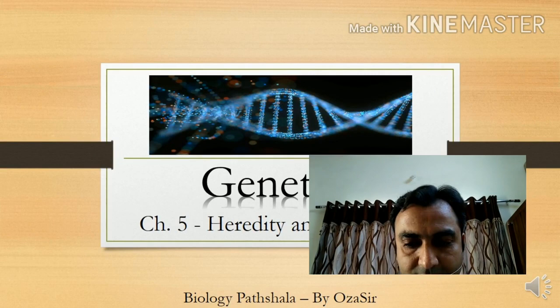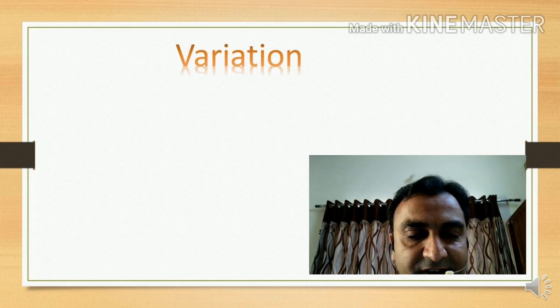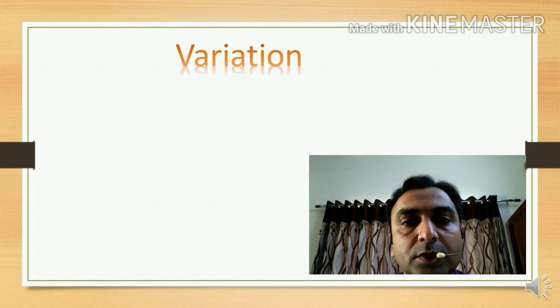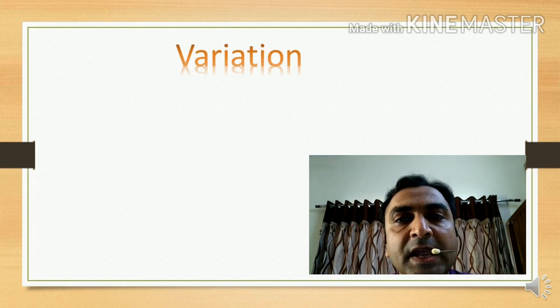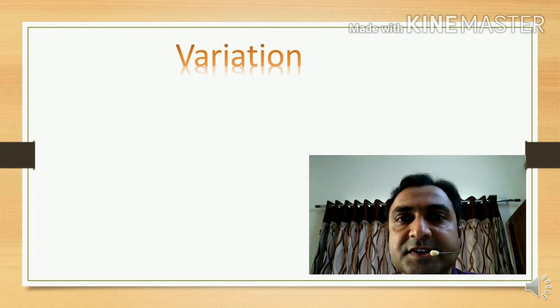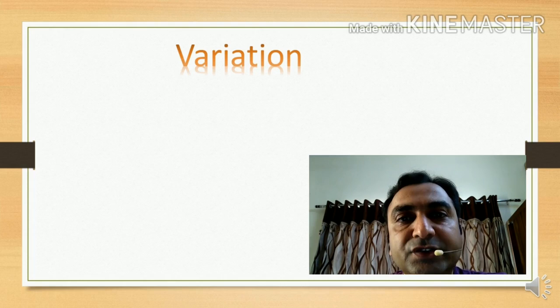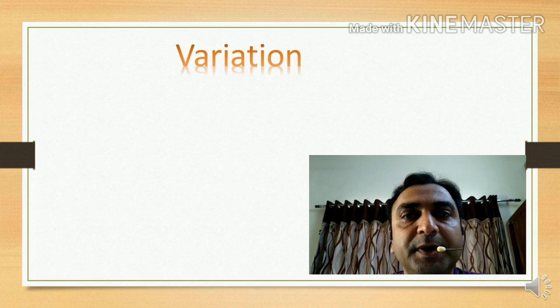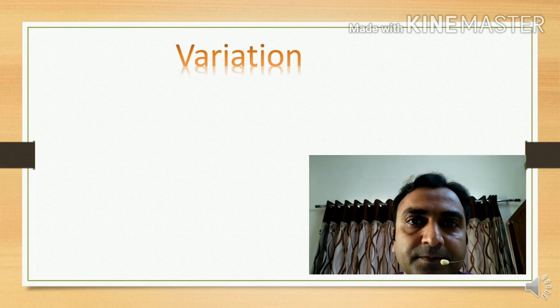Hello friends, here we are back with the topic of genetics, that is Mendelian genetics, and we are starting with a few basic terminologies of Mendelian genetics. In the previous video, we went through two basic terminologies of genetics — heredity and variation. Heredity is related to forwarding characters from one generation to another in a similar nature. But if the character is changed, it is said to be a variation. Variation is extremely important with respect to the diversity observed around us.